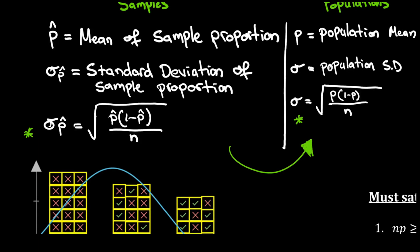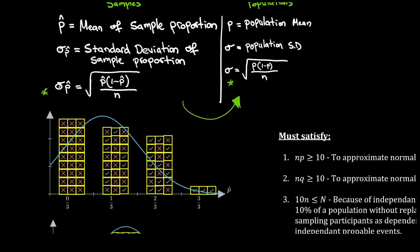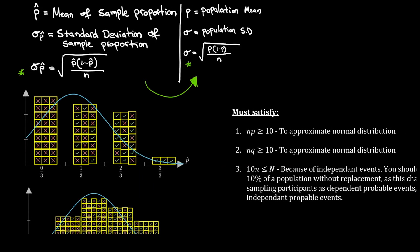We use sampling to estimate populations — we take a sample and see what sort of estimation it gives about the population. We saw that sampling distributions approach a normal distribution, and there are two conditions that need to be satisfied for this. Number one: N times P must be greater than or equal to 10. Number two: N times Q must be greater than or equal to 10, where Q equals 1 minus P — the probability of failure. Both must be satisfied to approximate a normal distribution.